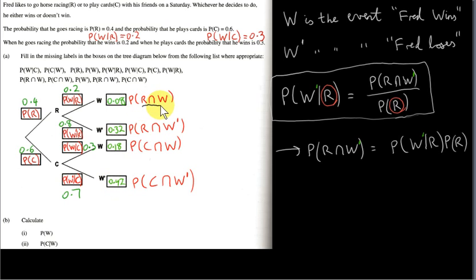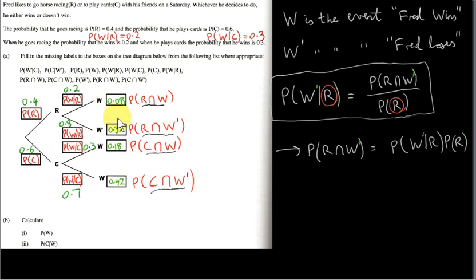These four events — races and wins, races and loses, plays cards and wins, plays cards and loses — are all possible outcomes for Fred, and exactly four. So their probabilities must sum to 1. Summing 0.18 + 0.32 = 0.5, and 0.42 + 0.08 = 0.5, giving 0.5 + 0.5 = 1. So they do sum to 1.